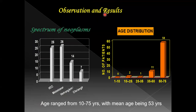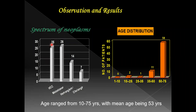Observations and results: The most common liver neoplasm was metastasis, seen in 26 patients, followed by HCC in 25 patients, then hemangioma, and lastly cholangiocarcinoma. In age distribution, the most common age of presentation was 50 to 75 years, with a mean age of 53 years.